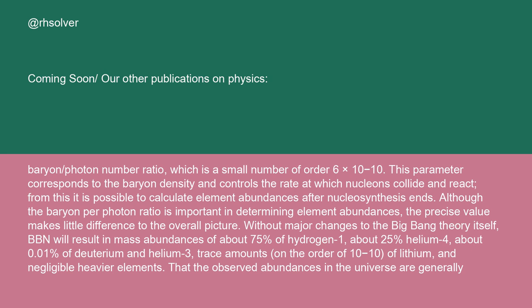Although the baryon-per-photon ratio is important in determining element abundances, the precise value makes little difference to the overall picture. Without major changes to the Big Bang theory itself, BBN will result in mass abundances of about 75% of hydrogen-1, about 25% helium-4, about 0.01% of deuterium and helium-3 trace amounts on the order of 10^-10 of lithium and negligible heavier elements.